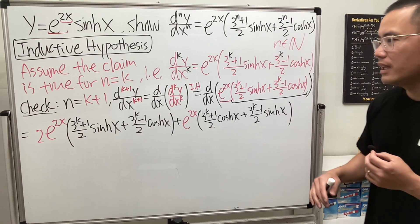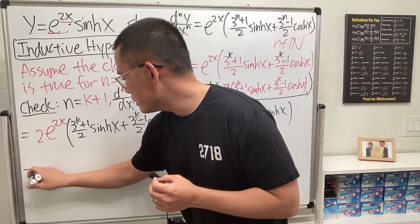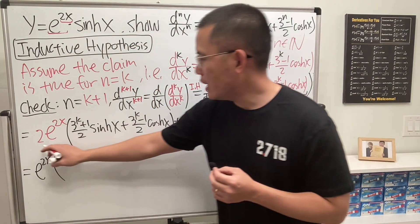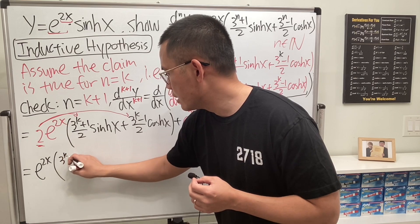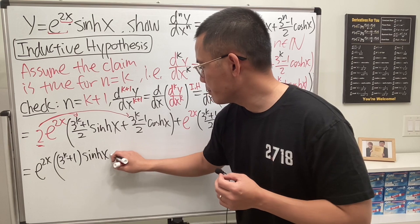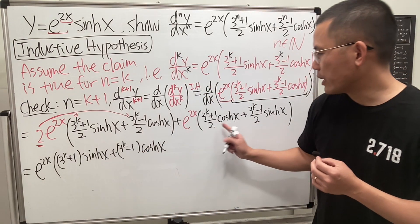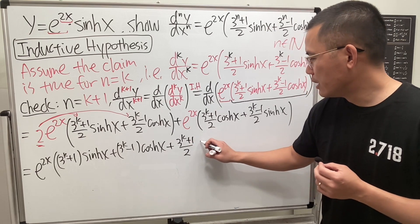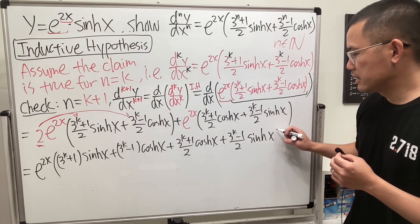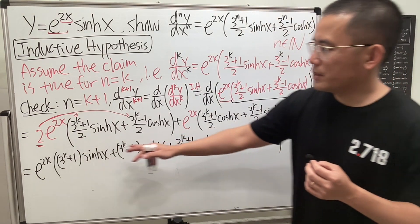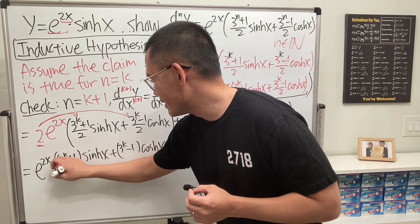Now factor out e to the 2x to the front. Be careful — we still have the factor of 2 from differentiating e to the 2x, so distribute it: this gives 2 times 3 to the (k+1)/2 for the sinh term and 2 times 3 to the (k−1)/2 for the cosh term. Then continue with the remaining terms. I'll get a common denominator of 2 for all terms.